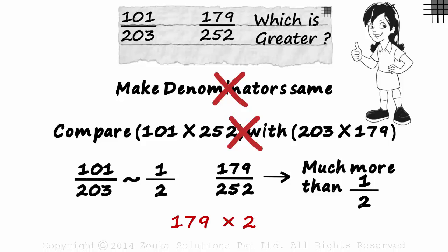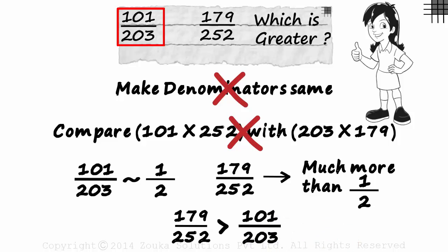What about 179 by 252? Well, this is much more than half. 179 times 2 is 358, and we have just 252 in the denominator. So we don't even need to compare them. We can easily say that 179 by 252 is greater than 101 by 203. That's how easy approximations make it for us. We just had to take a look at the fractions and take a call.